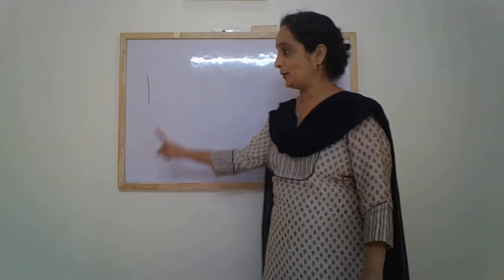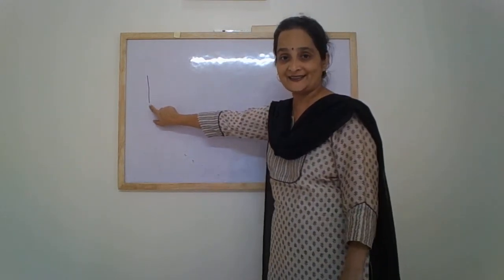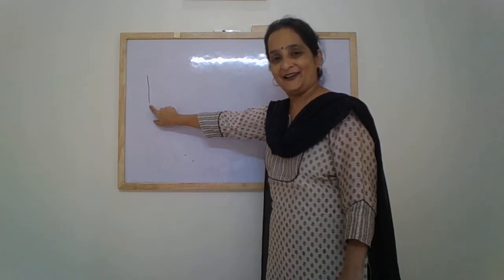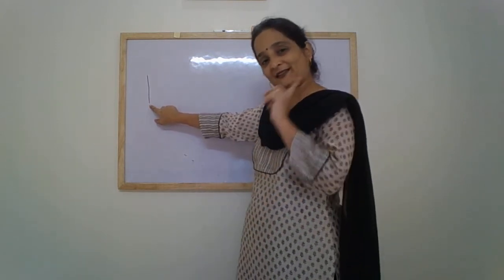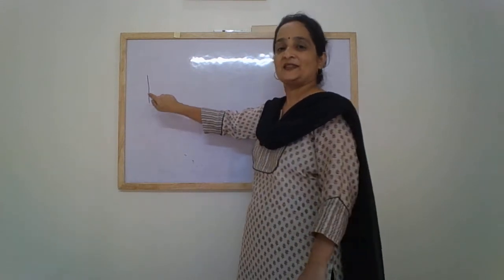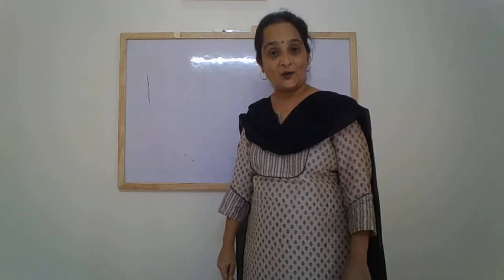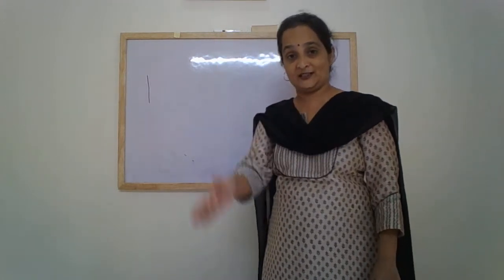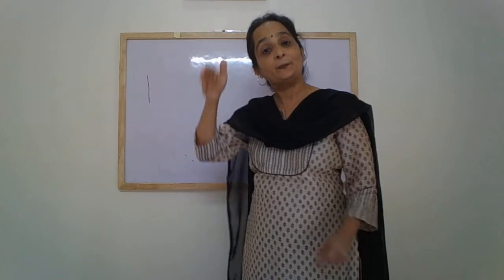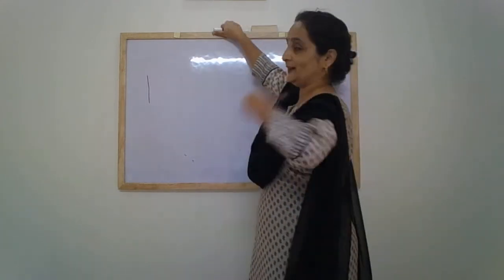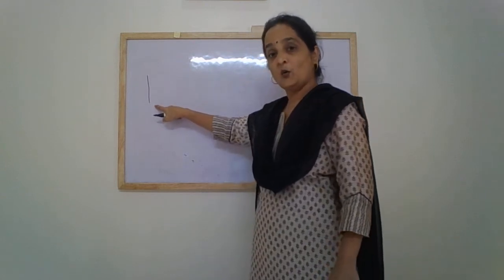So let us begin. Which number is this? Number 1. Children, when you start writing, number 1 is always first. We start with number 1, and all the numbers are always written vertically — that is, they are written one below the other. So let us start. Standing line — number 1.